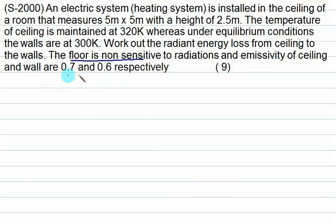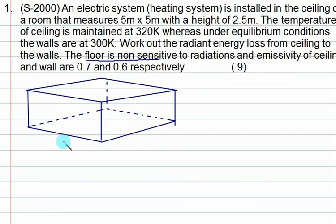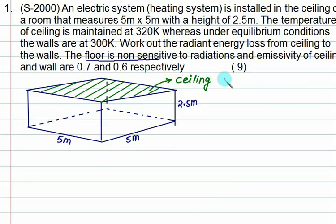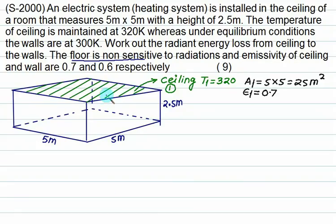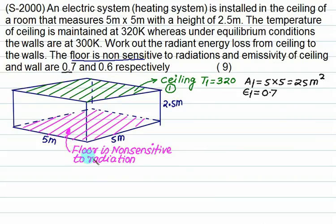The room is 5 m by 5 m. The ceiling is maintained at T1 = 320 K and is called body number 1. The area of the ceiling is 5 × 5 = 25 m² with emissivity 0.7. Since the floor does not participate in radiation, the remaining 4 vertical walls will participate and are modeled as body number 2.